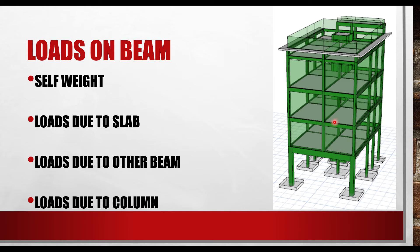The beam in the lower part of the building is an example of a primary beam. You can see it is supporting a beam in the horizontal direction — that supported beam is considered a secondary beam. Whenever you want to analyze this primary beam, the secondary beam being supported will act as a point load at that junction.